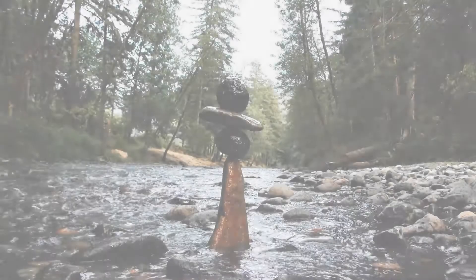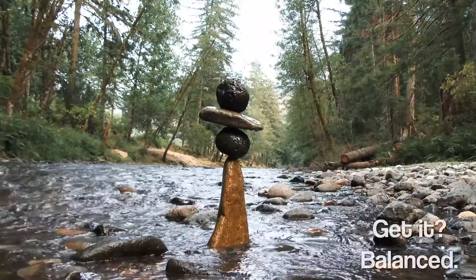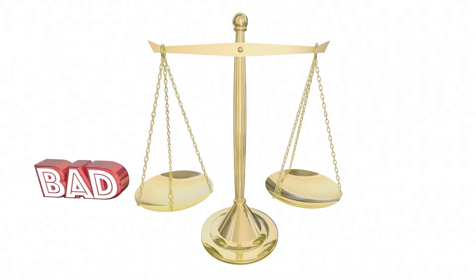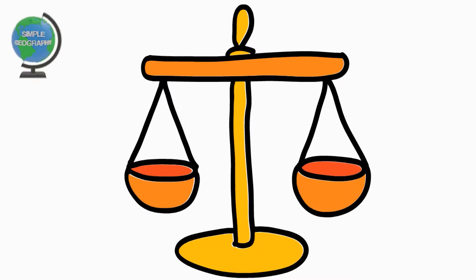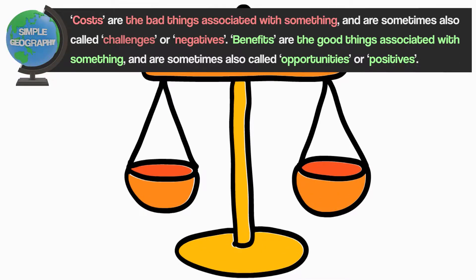In geography, we often have to look at things with a balanced view. That means thinking about different ways of looking at something, considering different points of view, or thinking about both good and bad. The word costs refers to the bad things associated with something, and are also called challenges or negatives. Benefits are the good things associated with something, and are also called opportunities or positives.